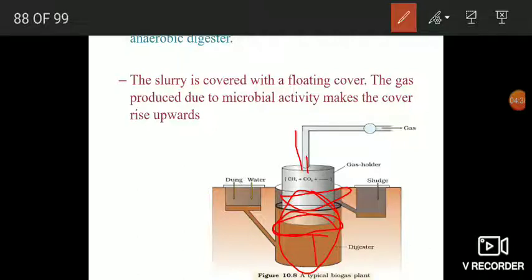When the gas is produced due to microbial activity, the floating cover moves upwards. You also have pipes attached to this digester. The gas which is produced is removed through these pipes and you can use these gases for different purposes. The used slurry is removed through this outlet and it can be used as a fertilizer.